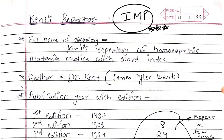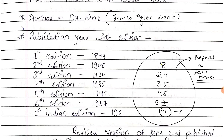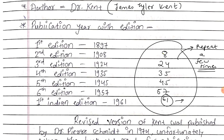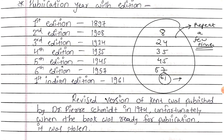Kent's Repertory. The full name of the repertory is Kent's Repertory of Homeopathic Materia Medica with Word Index. The author is Dr. James Tyler Kent. The year of publications by edition: the first edition was published in 1897, the second in 1908, the third edition in 1924, the fourth in 1935, the fifth edition in 1945, and the sixth edition in 1957. The first Indian edition was published in the year 1961.